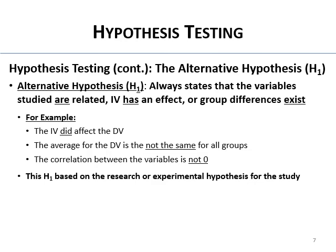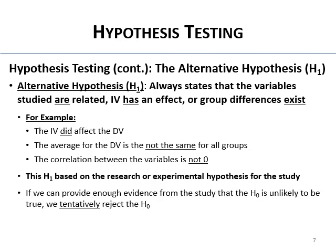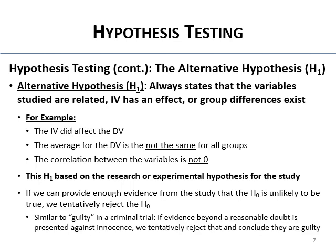H1 is the one I always write first — it's based on the research or experimental hypothesis for the study. If we can provide enough evidence that the null is unlikely to be true, we tentatively reject it. We use our significance values for that — if something is so unlikely to happen by chance that it's less than five times out of 100, we reject chance and say it's probably real. This is similar to a guilty verdict when evidence beyond a reasonable doubt is presented against innocence.